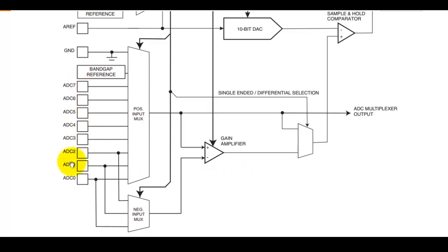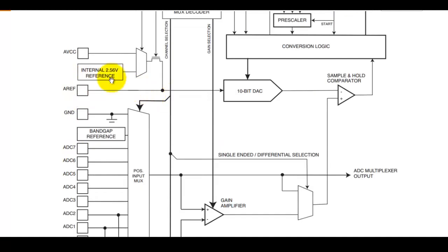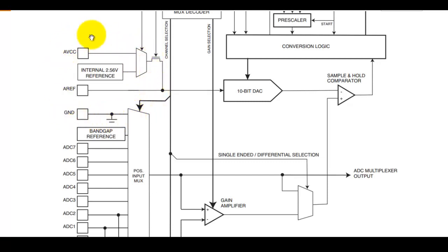These are the 8 pins of the ADC — ADC0 to ADC7 — which are multiplexed with Port A. This is the analog voltage, analog reference, and analog ground block.